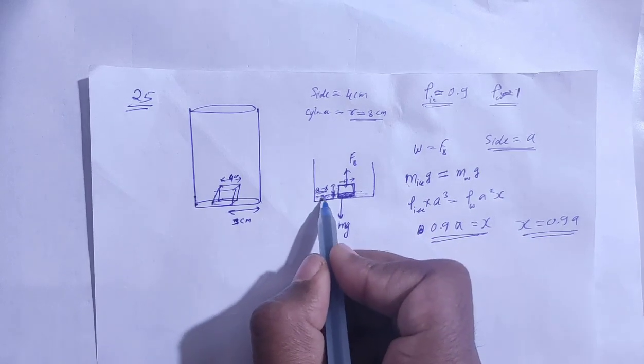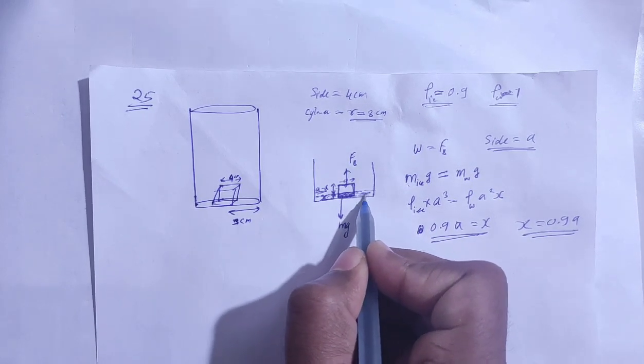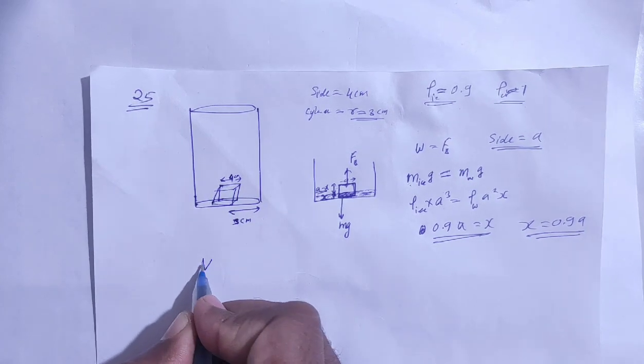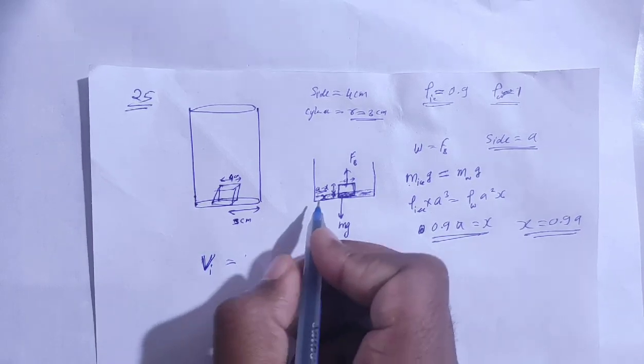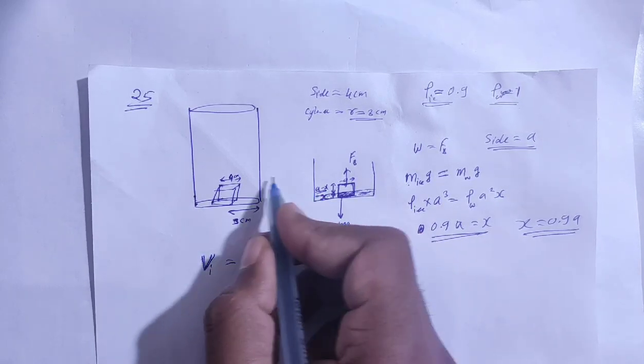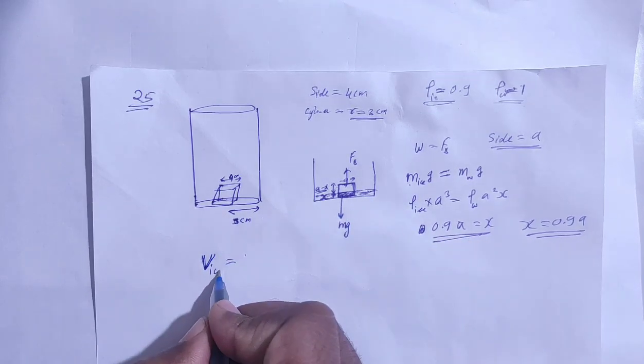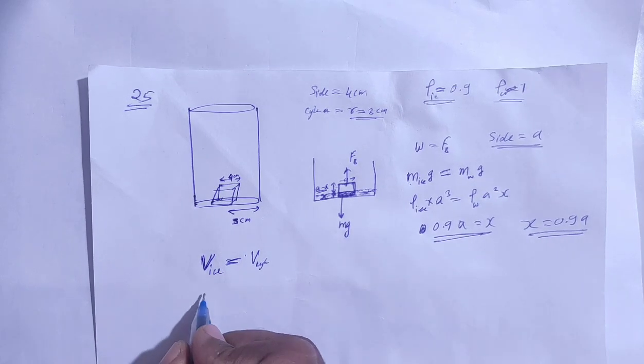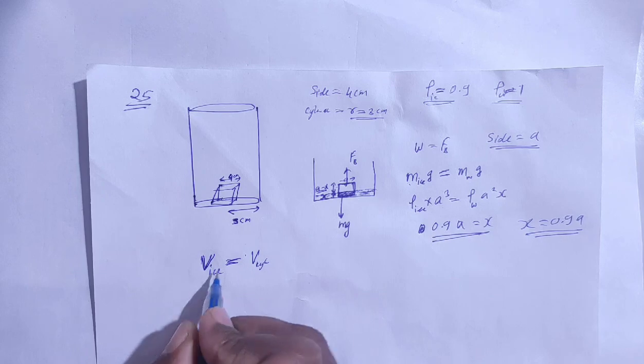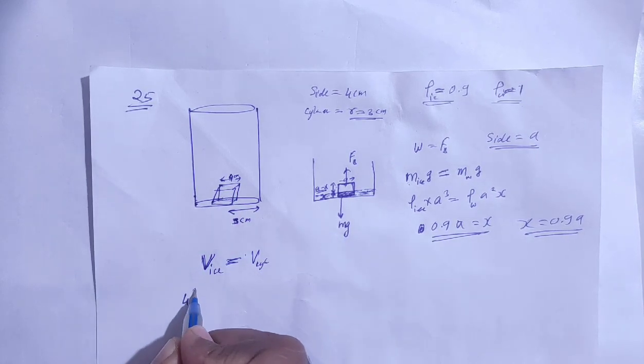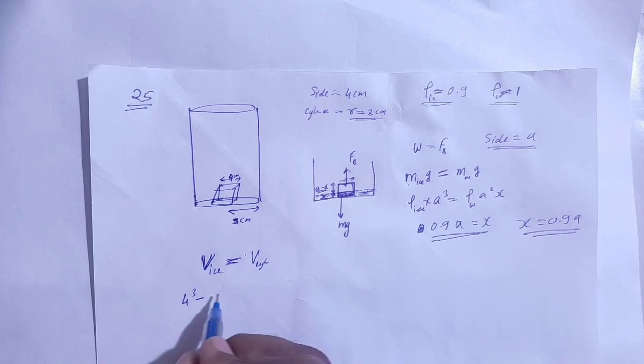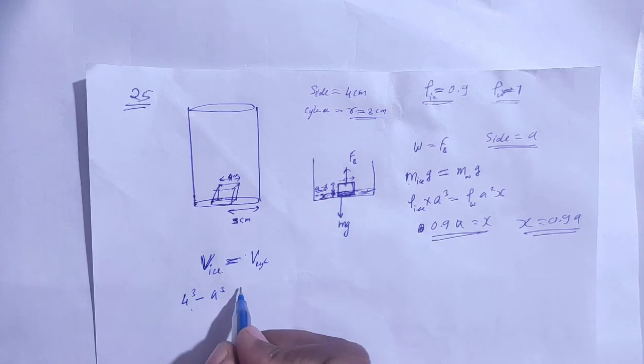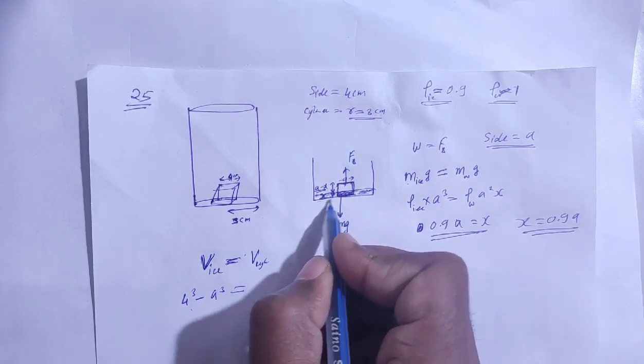Okay. Now if this was the volume of water conservation, the volume will be the same. The initial volume, the ice is 4 cubed, which is a cubed. So the cylinder volume is pi r squared into height.